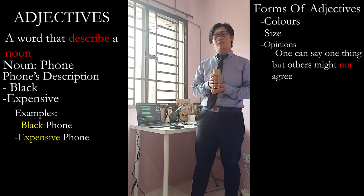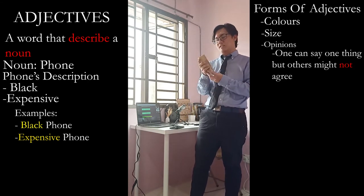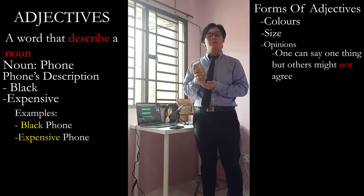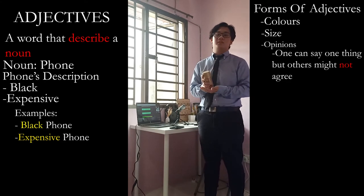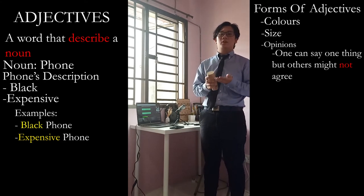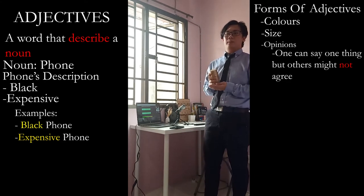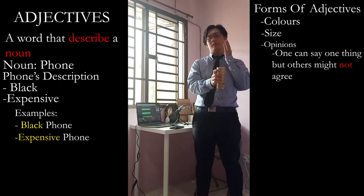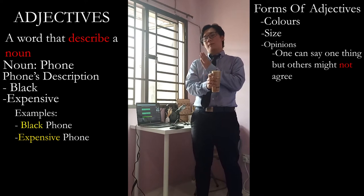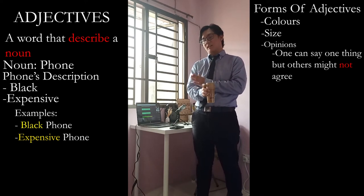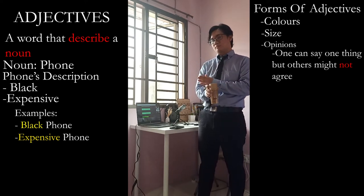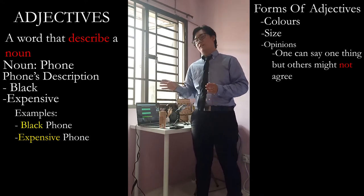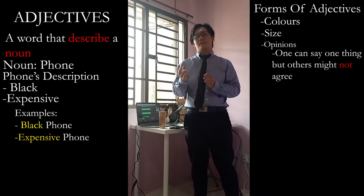This is a bitter coffee. See how that works? Some people might see it as bitter, but then some people might see it as delicious or even sweet. See how opinions work? One can say something, but the other might not say the same thing. And that, my friends, is adjectives.